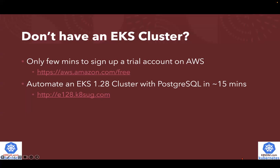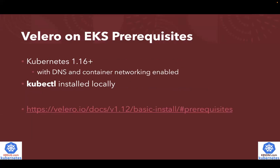If you don't have an EKS cluster, or even if you don't have an Amazon AWS account, it only takes a couple minutes to sign up a try account. And then with the automation scripts I created, available from a GitHub page, you can automate an EKS 1.28 cluster in about 15 minutes. And once you have the EKS cluster ready, here are the prerequisites to enable Valero on EKS.